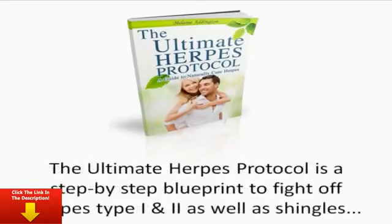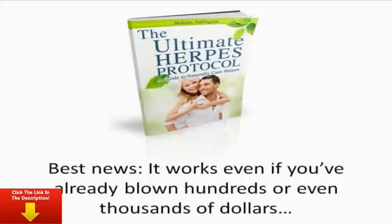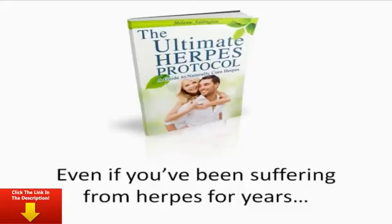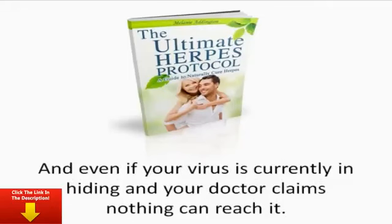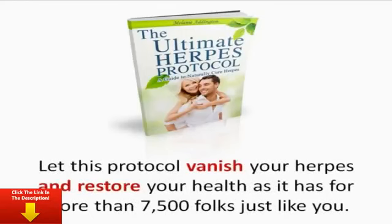The Ultimate Herpes Protocol is a step-by-step blueprint to fight off herpes type 1 and 2, as well as shingles, without unleashing chemical warfare on your body. Best news, it works even if you've already blown hundreds or even thousands of dollars on conventional herpes medication without significant relief, even if you've been suffering from herpes for years, and even if your virus is currently in hiding and your doctor claims nothing can reach it. Let this protocol vanish your herpes and restore your health as it has for more than 7,500 folks just like you.